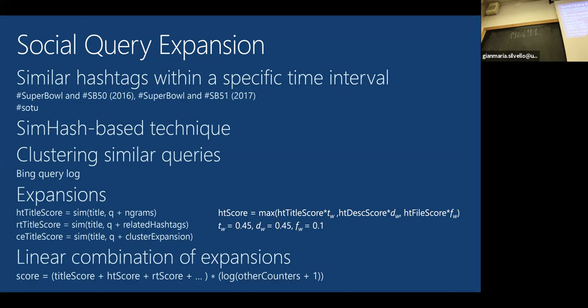We combine all these low-level scores. For hashtags we get the maximum score across title, description, files, and other fields, then combine everything: scores for title, hashtags, retweets, etc., multiplied by behavioral counters—how many times retweeted, how many times liked—from the Twitter data. That's why we call it 'social query expansion': standard text expansion combined with behavioral data.